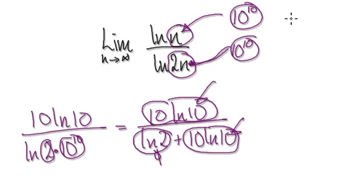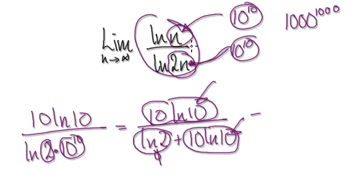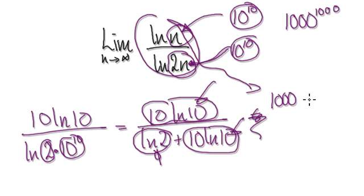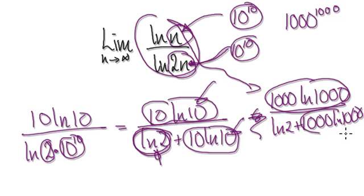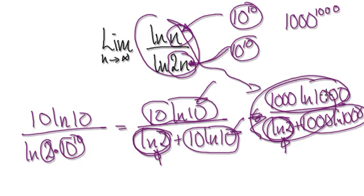Let's make it even bigger — 1000 to the power of 1000. This would then become 1000 times natural log of 1000. And then you've got natural log of 2, and here you've got 1000 plus 1000 times natural log of 1000. So these two are exactly the same, and then you've got this tiny bit here. So you can see it's heading towards 1.